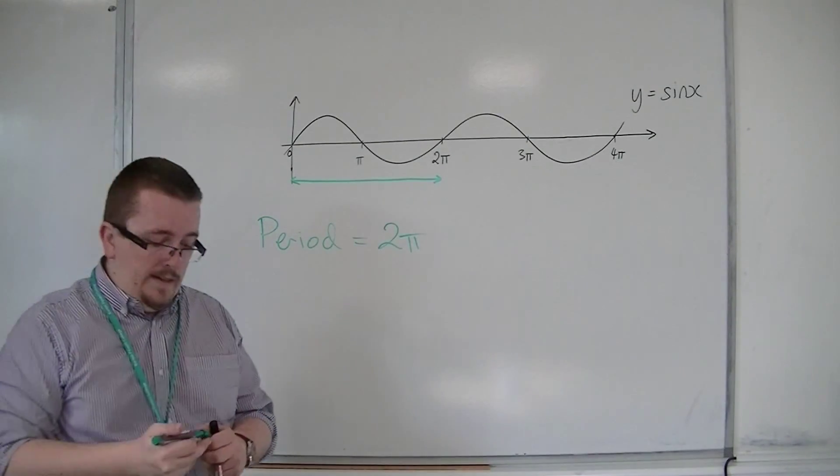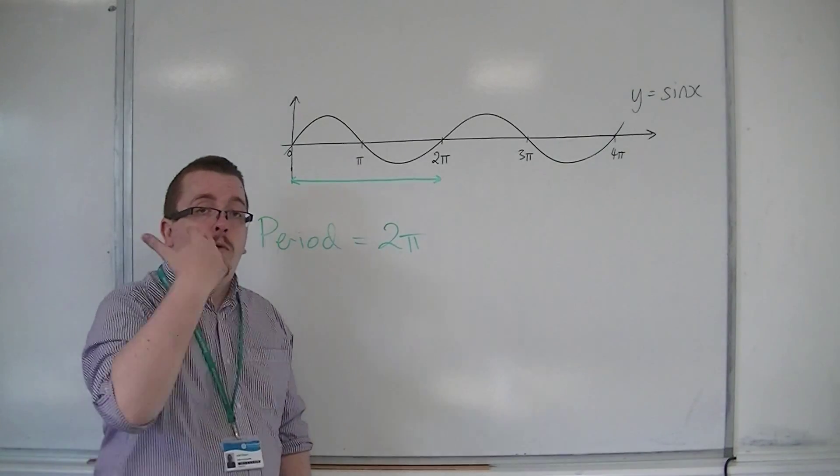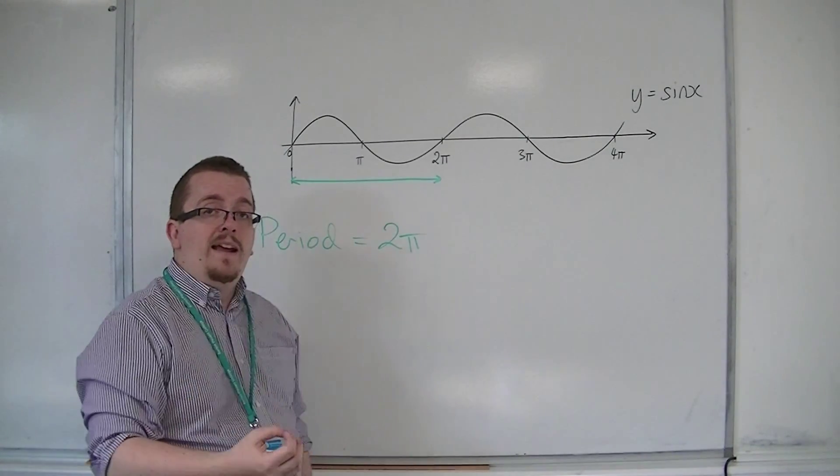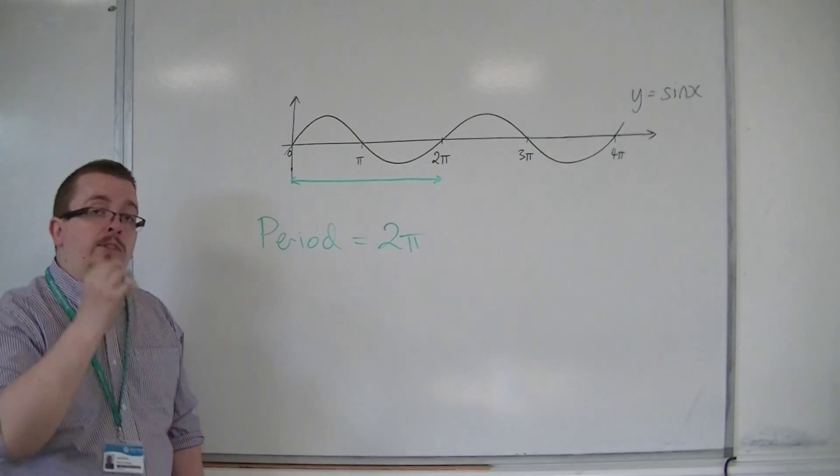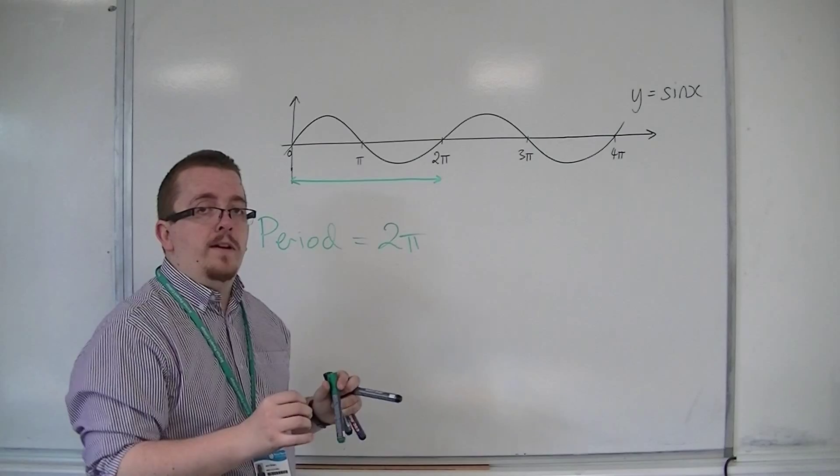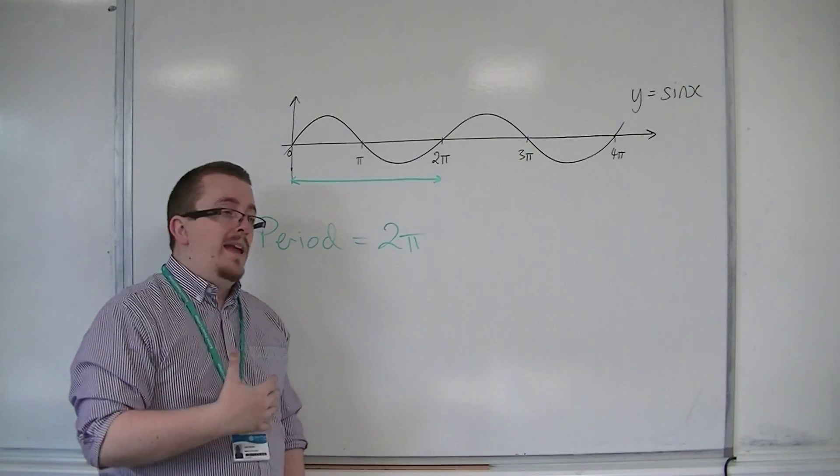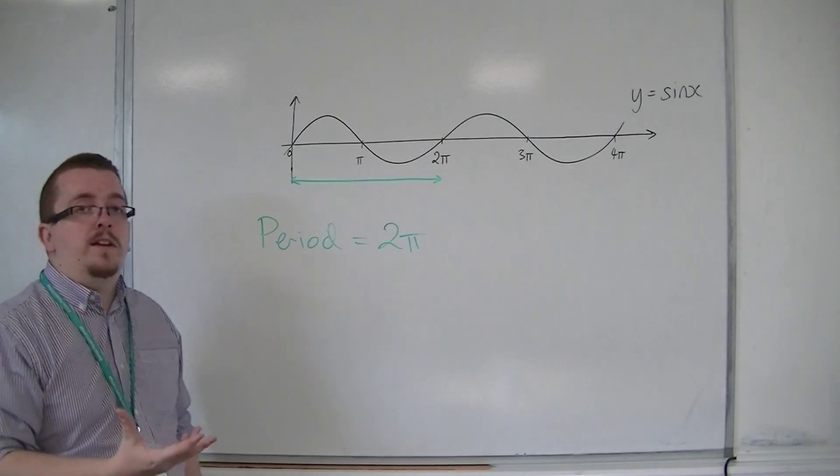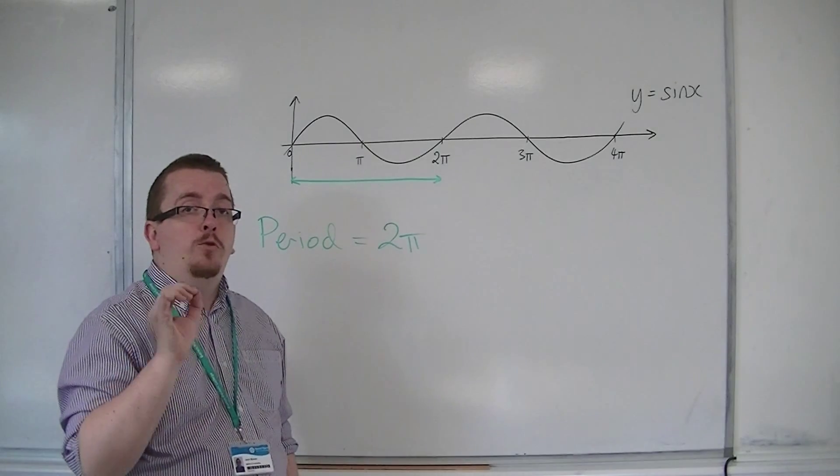You'll find that y equals sin x, y equals cos x, tan x, sec x, cosec x, cot x—all of these are periodic. But we're also going to be looking at different types of periodic curves, ones that we can build up from scratch.